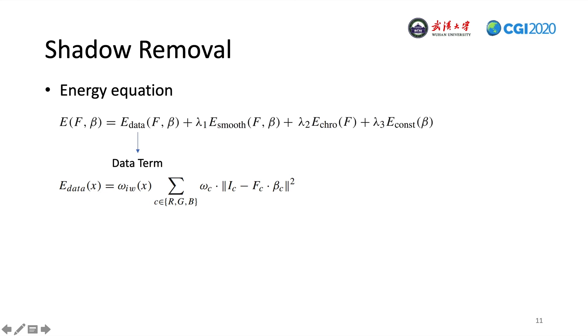The first term is the data term. As we aim to decompose the input image into a product of shadow-free and shadow factor components, we enforce this as a soft constraint during data fitting. To make the decomposition more robust to white illumination deviation, we use per-channel weights in the constraint.